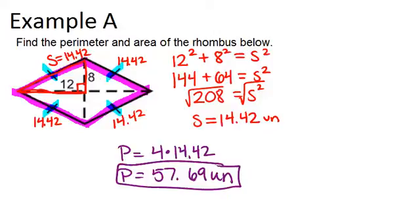To figure out the area of this rhombus, remember that the area of a rhombus is the product of the diagonals divided by 2. The diagonals would be this length, which will be 24, because it's 12 plus 12. The other diagonal will be 16, because it's 8 plus 8.